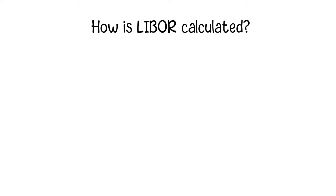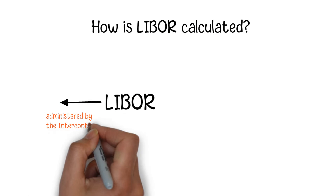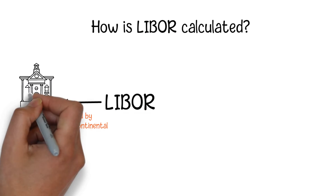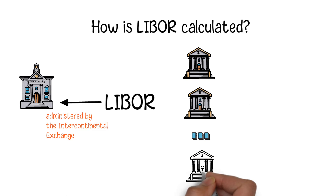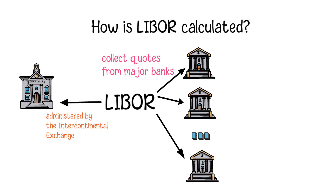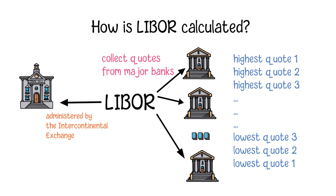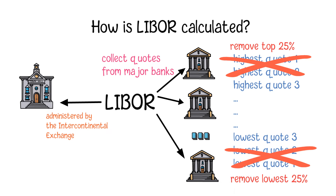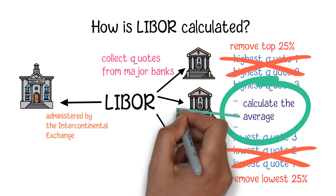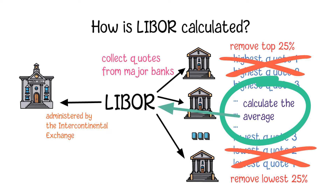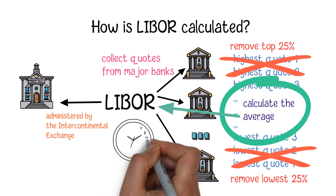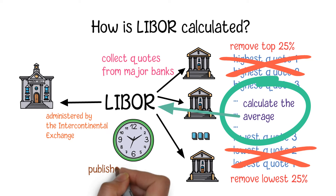LIBOR is administered by the Intercontinental Exchange, which collects quotes from major banks about how much they will charge other banks for short-term loans. The Intercontinental Exchange then removes the highest and lowest 25% of submissions and calculates the average from the remaining ones. The final rate is announced and published each morning around 11am London time.